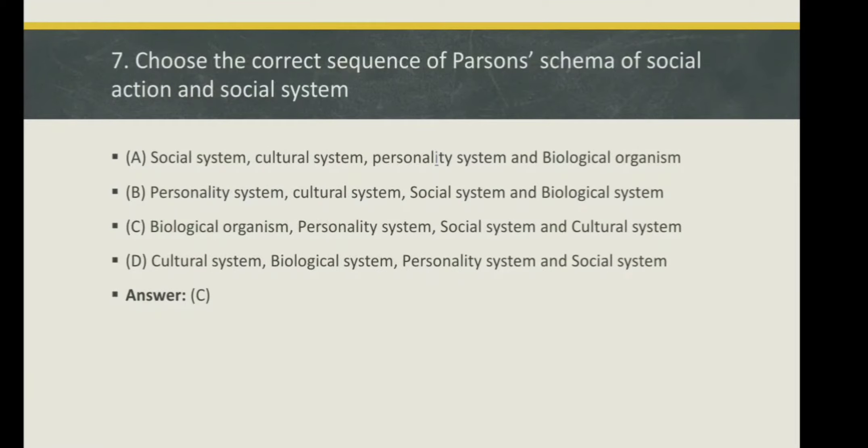Choose the correct sequence of Parsons' schema of social action and social system. First option: Social System, Cultural System, Personality System and Biological Organism. Option B: Personality System, Cultural System, Social System and Biological System.